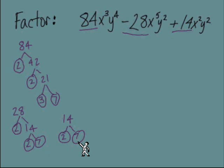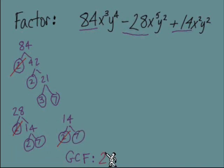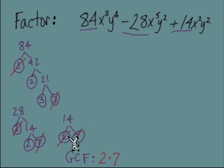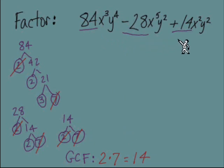The GCF is found by identifying factors common to all three coefficients. We can take a 2 from each — so there's one 2 in the GCF. Can we take anything else? Yes, a 7 from each. Now the GCF is made of one 2 and one 7. Looking at the remaining lists, there are no factors we can take from all three terms. We multiply 2 and 7 to get 14 — that's the GCF of 84, 28, and 14.